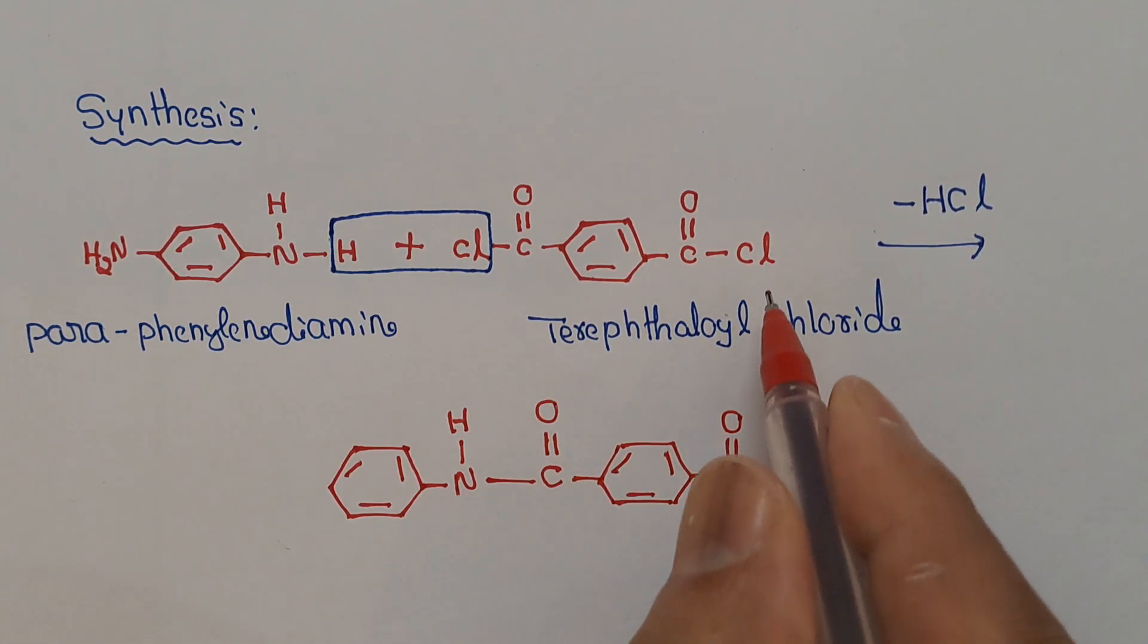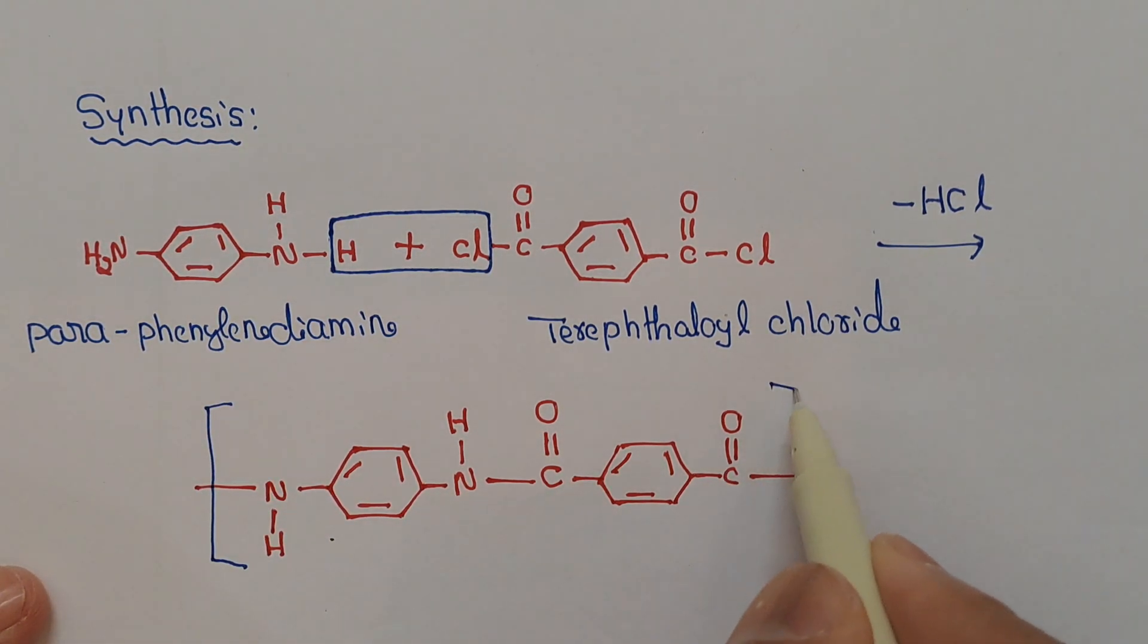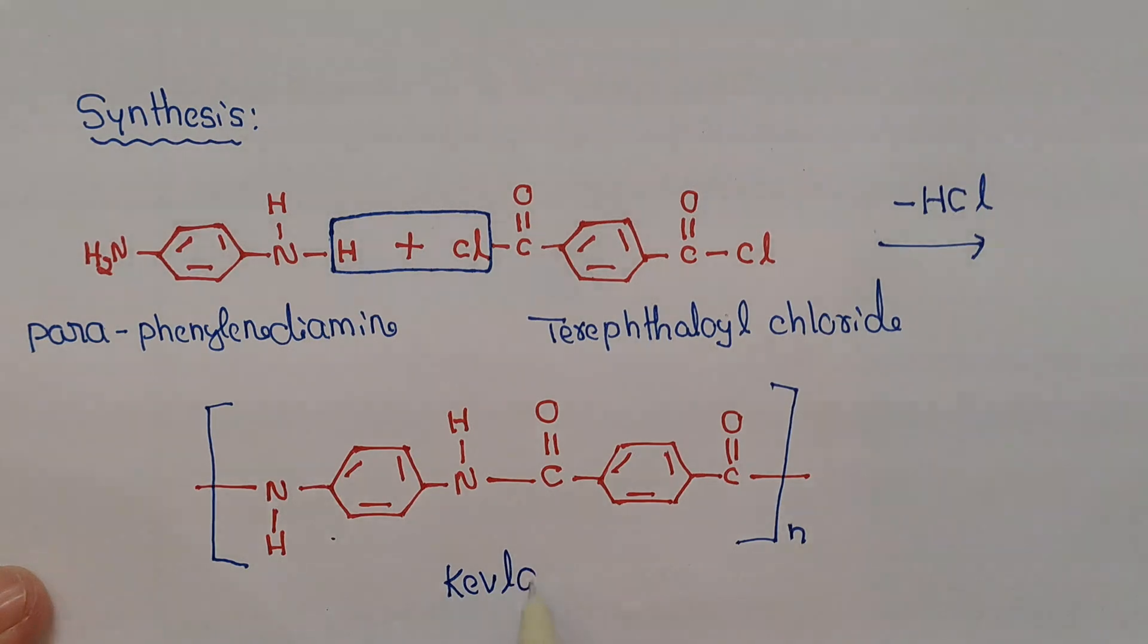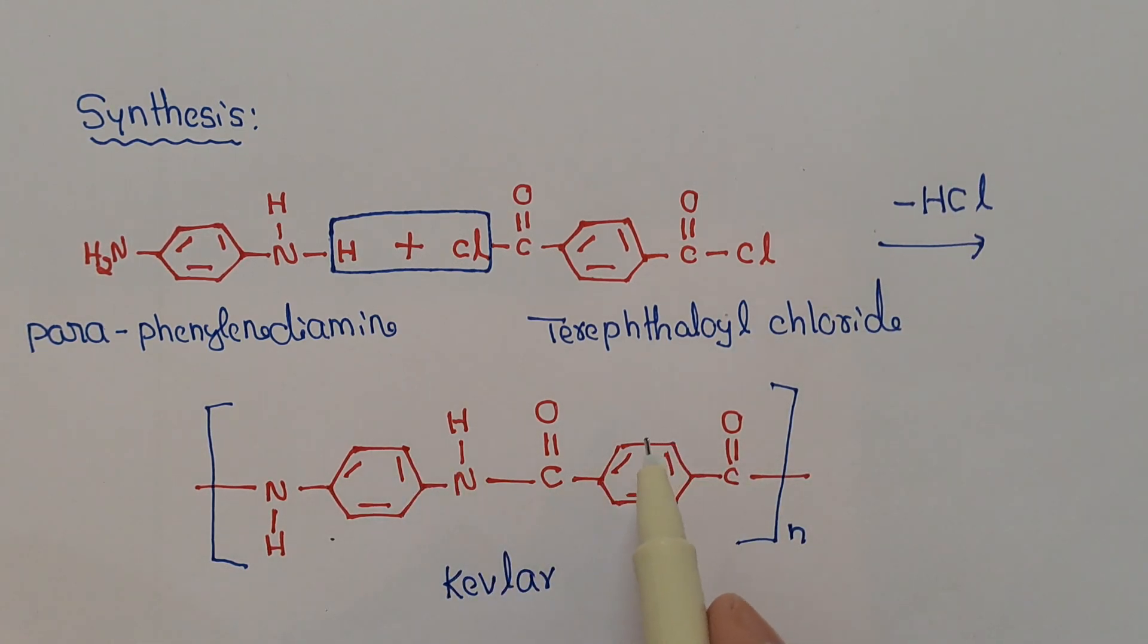Now here this chlorine is lost with the adjacent one. Here there is NH like this. This is the repeating unit. This is Kevlar. So one molecule of HCl is eliminated during the condensation process. Paraphenylenediamine and terephthalyl chloride condensation reaction yields Kevlar.